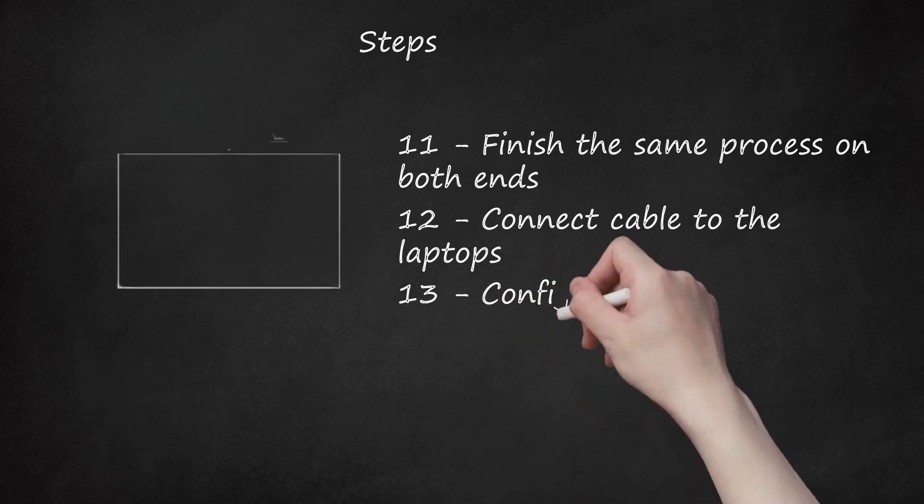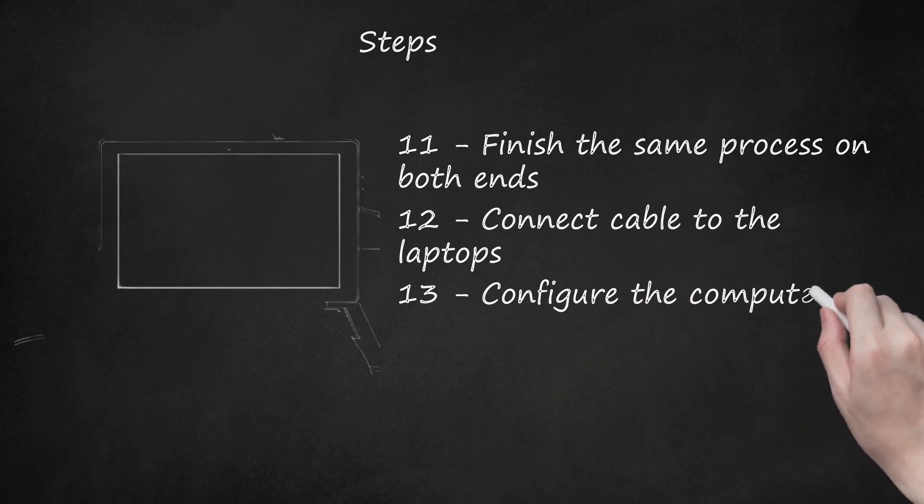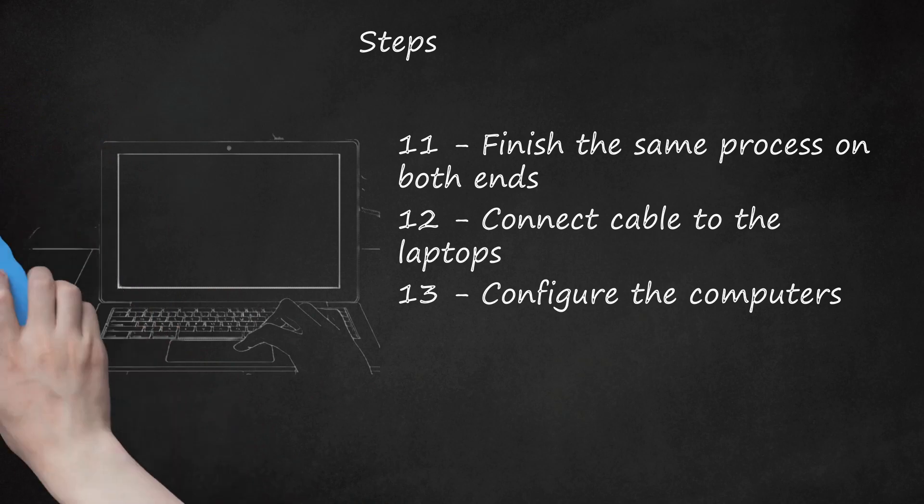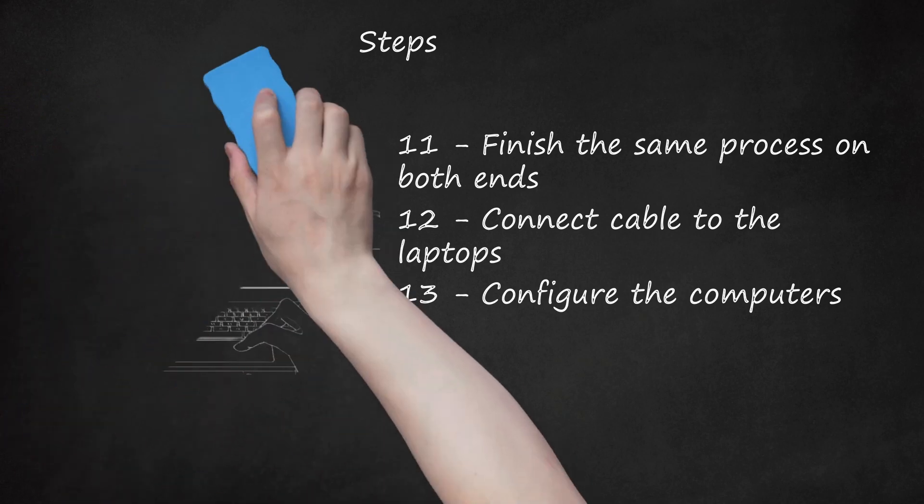Step 13: Configure the computers. To start the connection, you will have to assign an IP address for both computers. To change the IP address, you should make changes in both computers. Open Control Panel from the Start menu and click on Network and Internet, and click on Networking and Sharing Center.